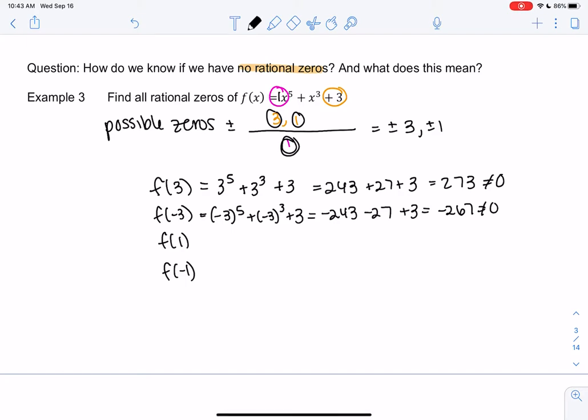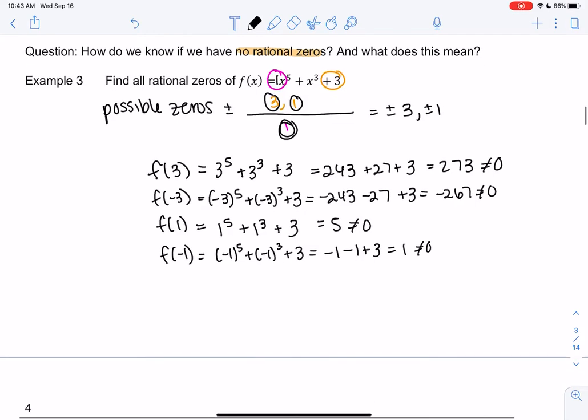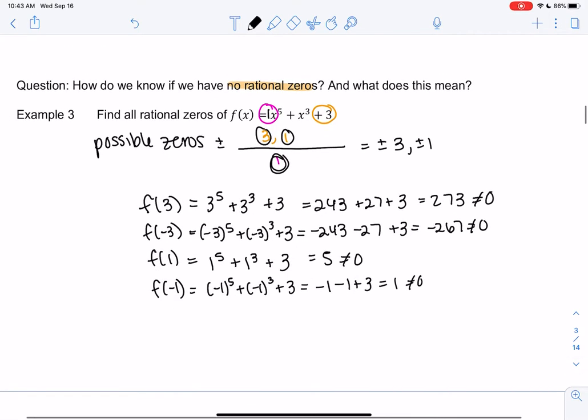As soon as we know it's not 0, we don't really care what the value is. 1 to the 5th plus 1 cubed plus 3 is 5, also not a 0. And then negative 1. We get minus 1, minus 1, plus 3, we get 1, which is also not 0. So that means this has no rational zeros, because none of the possible zeros work.